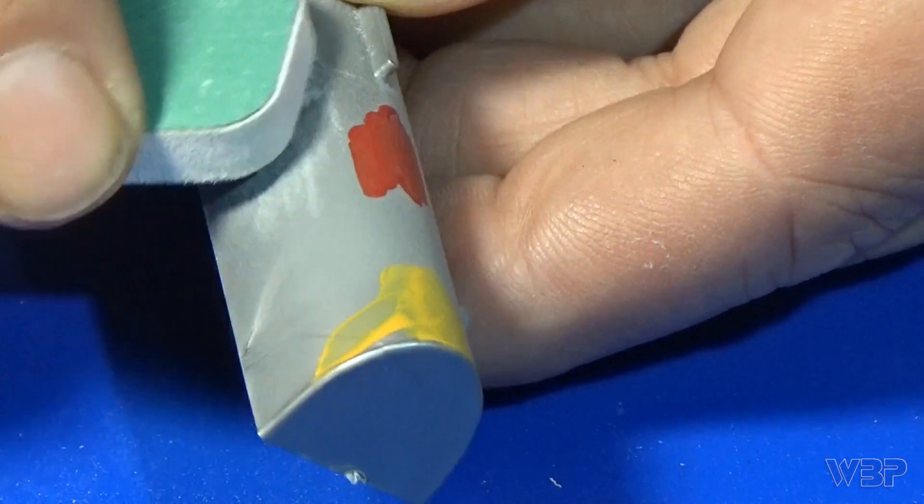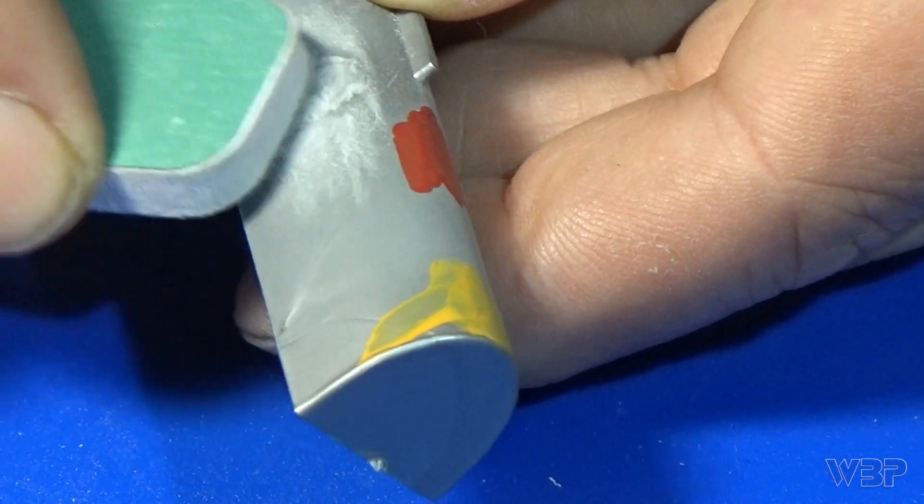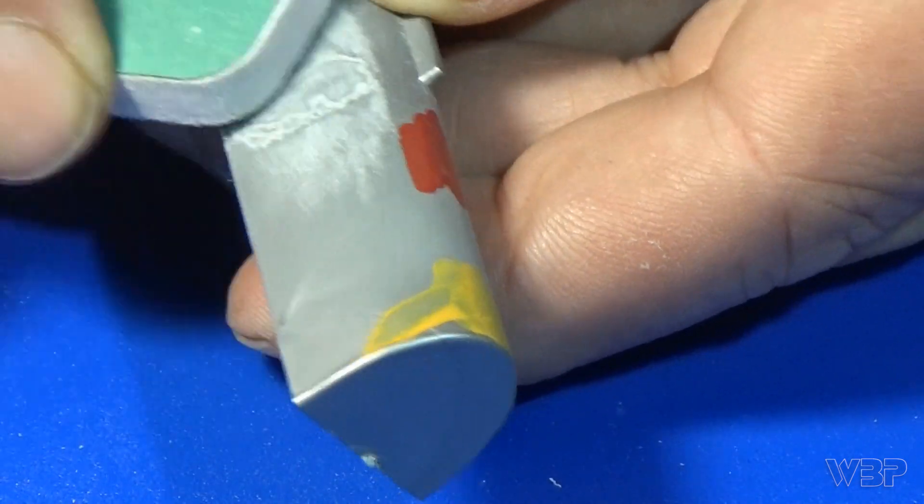After it hardened, I attacked it with my sanding sticks to make it level with the rest of the plastic and smooth it down.